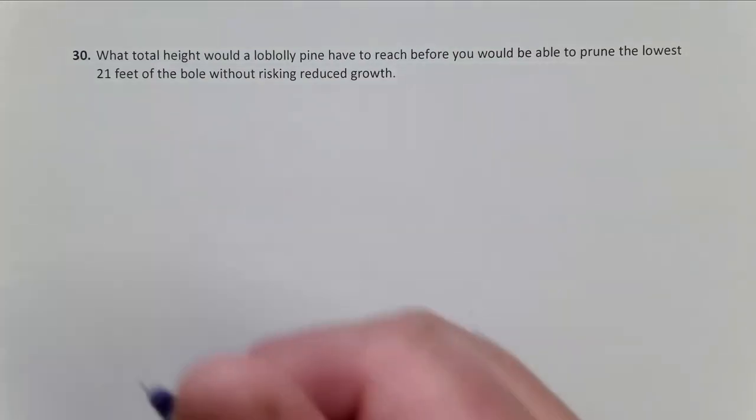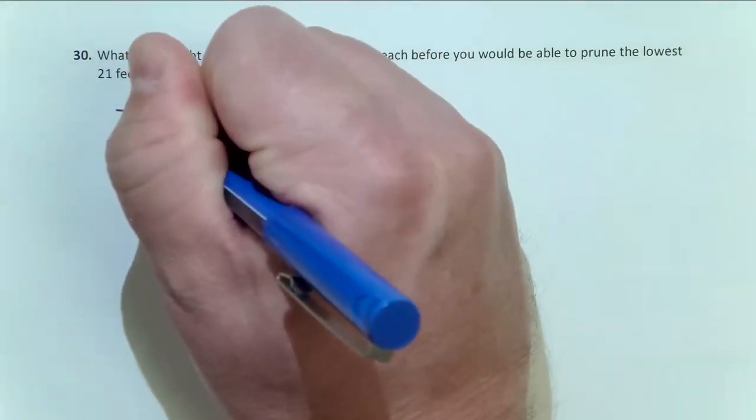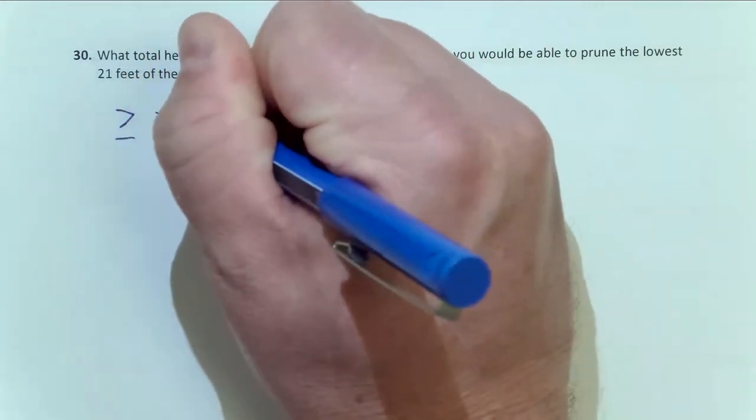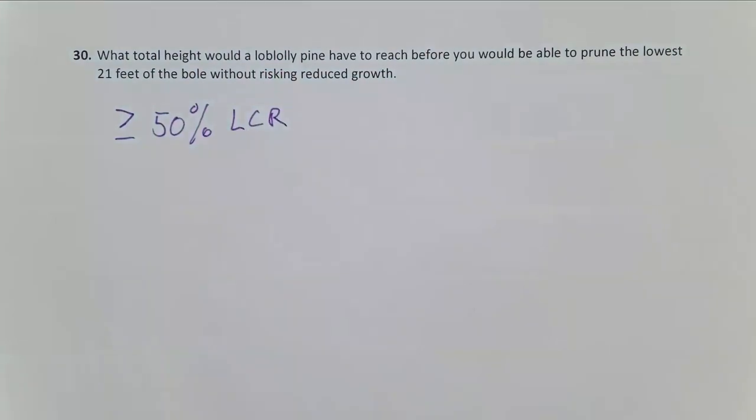So our general rule of thumb for loblolly pine is we want to maintain a live crown ratio as it relates to pruning of above 50%. Live crown ratio, which I'm going to abbreviate LCR.